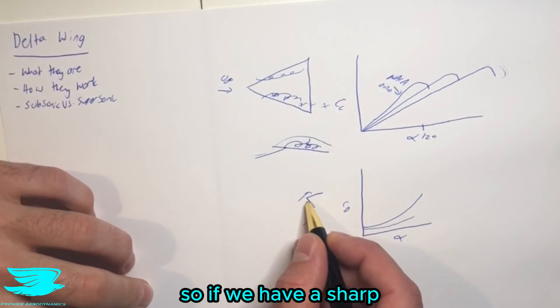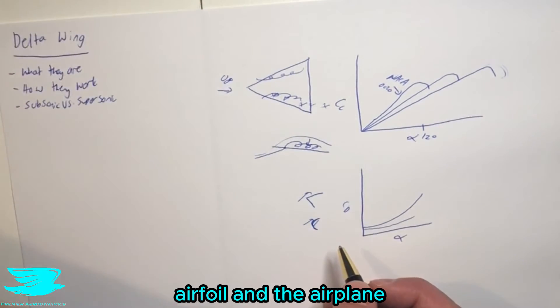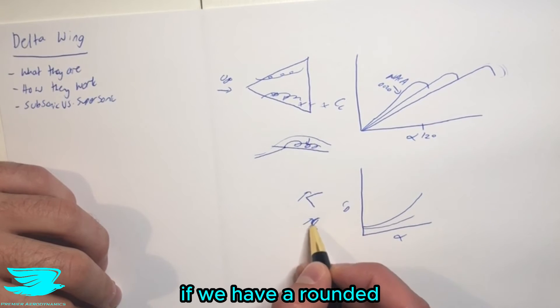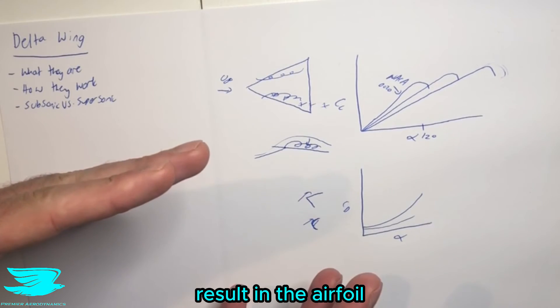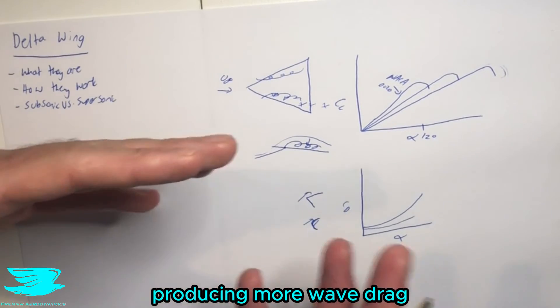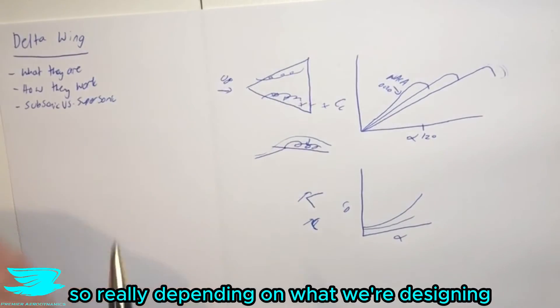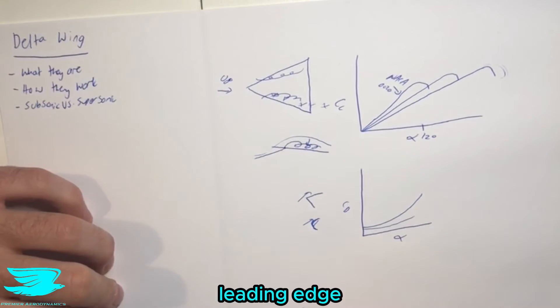So if we have a sharp leading edge, that's going to reduce the wave drag of the airfoil and the airplane as we go to supersonic speeds. On the other hand, if we have a rounded leading edge, that's going to result in the airfoil producing more wave drag as we go to supersonic speeds. And then that increases the drag overall. So really depending on what we're designing the airfoil for, we can kind of choose what we want to do with this leading edge.